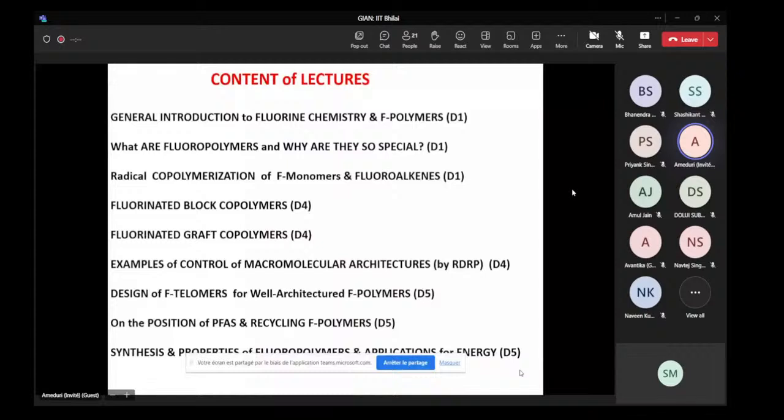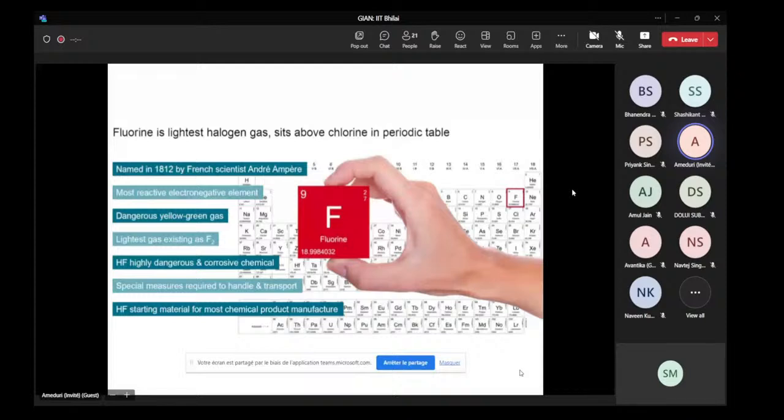So I am very pleased to give this series of lectures and thank you again, Sanjeev, for inviting me to do this. Today I am going to talk about fluorine and I give you an introduction about why fluorine is so interesting because this is one of the last halogen gases on the periodic classification. It's located above chlorine and it was named in 1812 by the French scientist André Ampère. We are very proud of that.